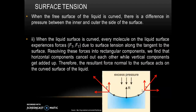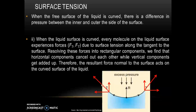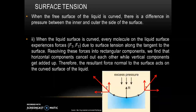But when the surface of the liquid is curved, there is a difference in pressure between the inner and outer surface. Every molecule on the liquid surface experiences forces due to surface tension along the tangent to the surface. When we resolve this tangential force into horizontal and vertical components, the horizontal components cancel out as they act in opposite directions, while vertical components get added. The resultant force is therefore normal to the curved surface.